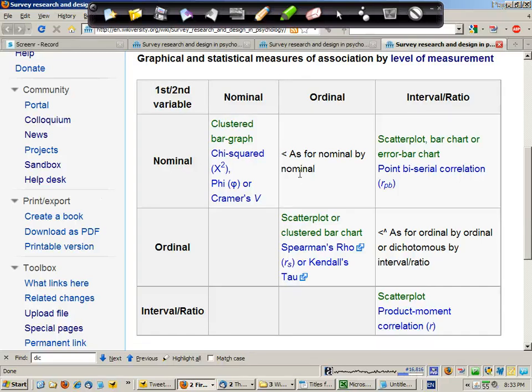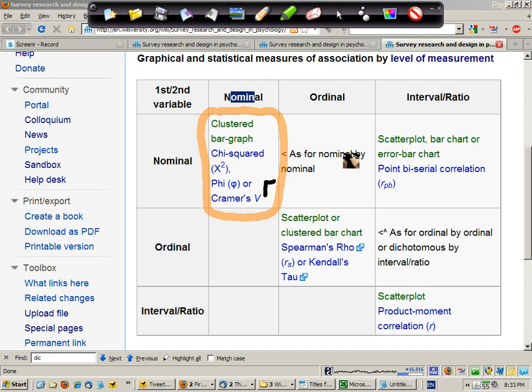In this case, for the graphical options, we can use a clustered bar graph, and for statistical purposes, we can use chi-squared as the test statistic and phi or Cramer's V as the correlation statistic. And that's equivalent to a Pearson's product moment correlation.